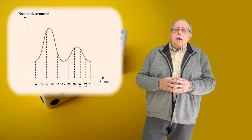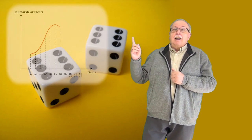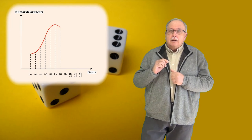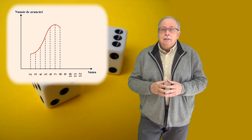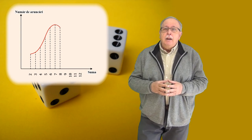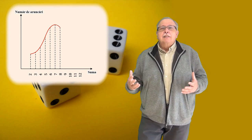Dacă forma graficului este corectă și maximul este acolo unde trebuie, așa cum vedeți aici, dar graficul nu este complet, adică nu apare tot clopotul, asta înseamnă că nu avem toate datele. Graficul nu reprezintă fenomenul în totalitate — avem doar o reprezentare parțială a fenomenului.